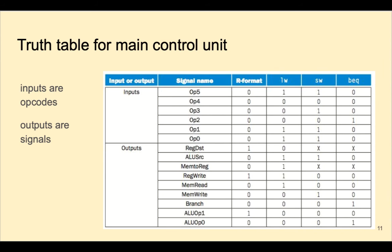Here's the truth table for the main control unit, showing that the input is the 6-bit opcode, and the outputs are determined by the opcode.